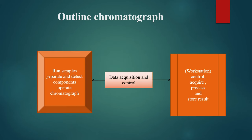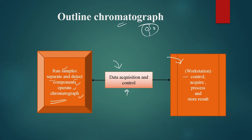The elements of CDS are: the chromatograph — which separates components, runs samples, detects components, and operates the instrument; data acquisition — which controls, secures, and transfers data; and workstations — which control, acquire, process, and store data from the analysis.